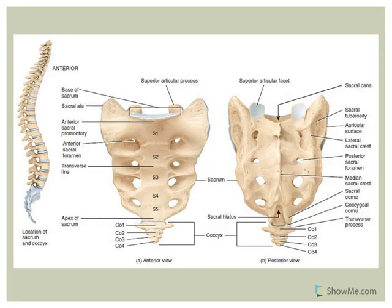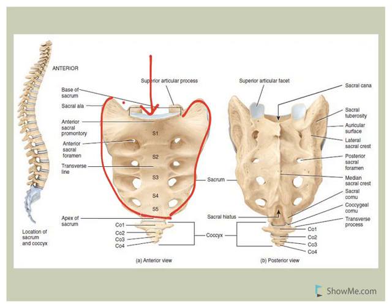The sacrum and coccyx have a very classic look. The sacrum is all fused vertebrae together — it articulates with the fifth lumbar vertebra above and the coccyx below. The coccyx, or tailbone, is four to five vertebrae that have been fused together.